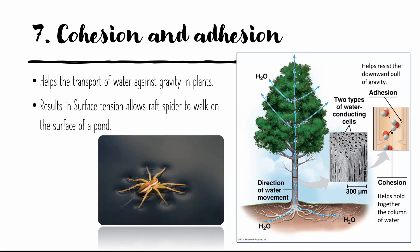The last property is cohesion and adhesion. These properties result from hydrogen bonds. Cohesion is the attraction between water molecules, and adhesion is the attraction of water molecules to another substance. Cohesion and adhesion both help transport water against gravity in plants. Cohesion also results in surface tension, which allows small insects to walk on the surface of water.